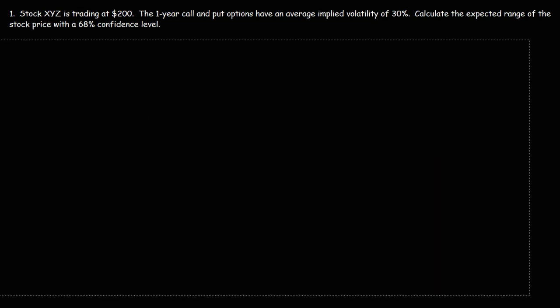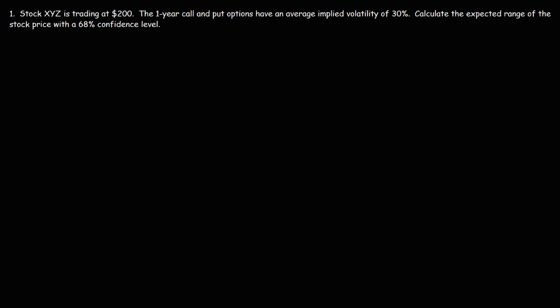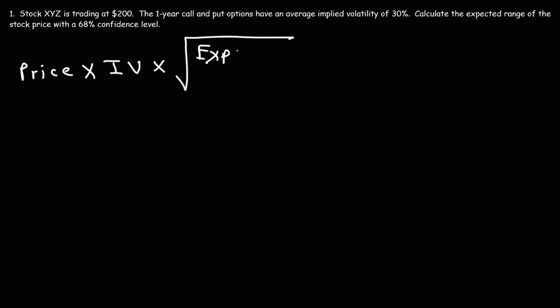In this video, we're going to talk about how to use implied volatility to see how far the price of a stock can change with a 68% confidence level. The formula we're going to use is: stock price × implied volatility × √(days to expiration / 365). This gives us the movement within one standard deviation from the mean.